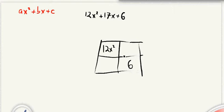So that's the start of our box. Now to find what we're going to put in these corners right here, what we need to do is we need to multiply together the 12 and the 6. So we're going to do off to the side, we're going to do 12 times 6, and 12 times 6 is 72.